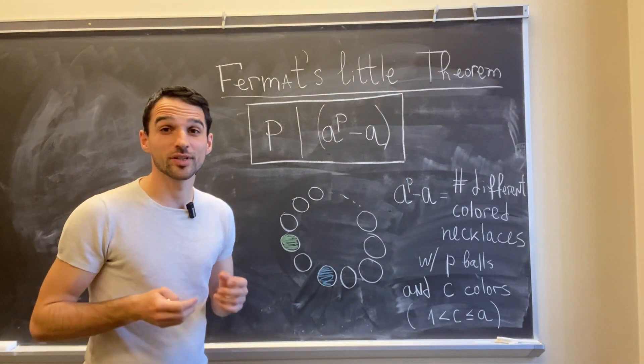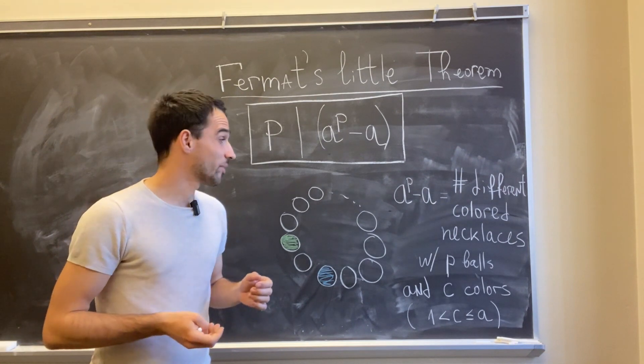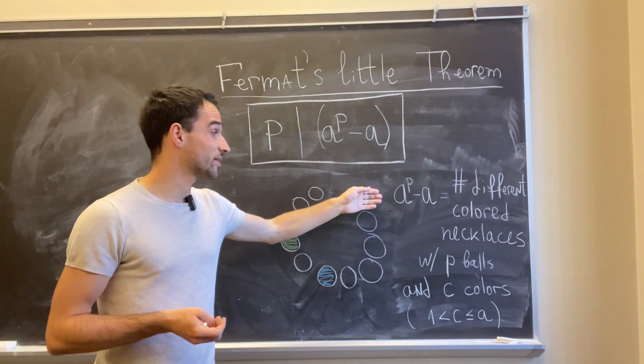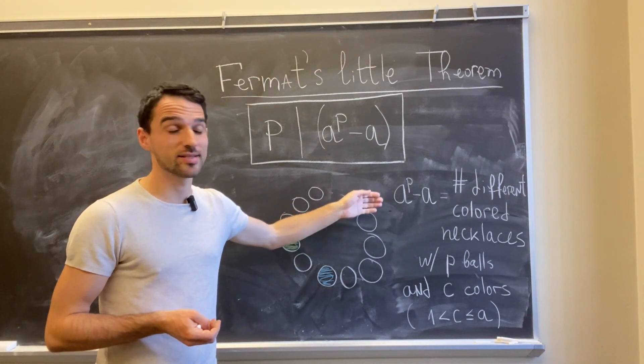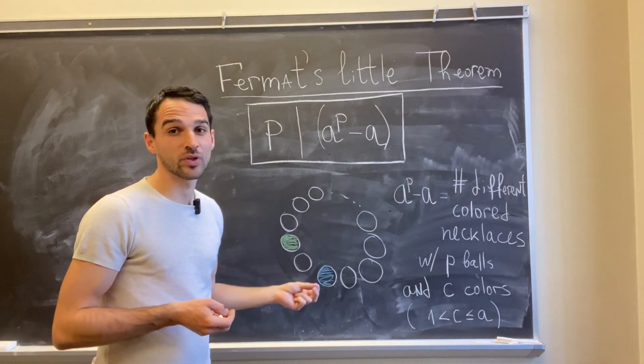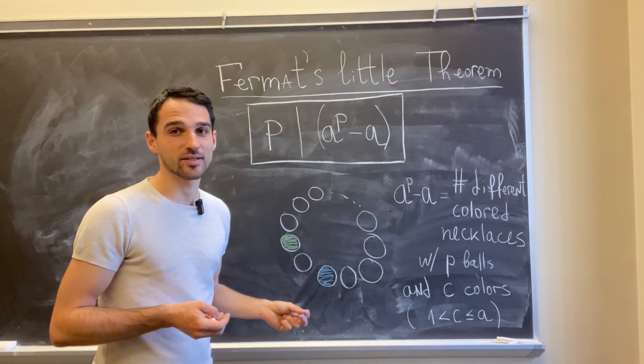So here is the reason for the little theorem to be true. Basically, if you take any given necklace in this set of a to the p minus a necklaces, then it turns out that if you rotate it, then you always get a different necklace.